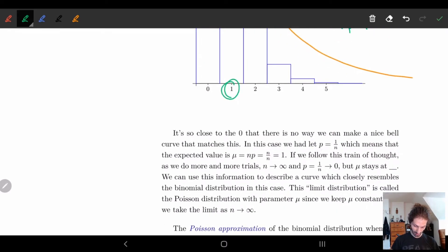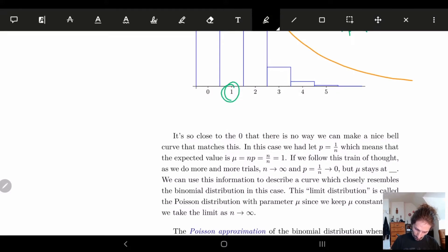So if we let p equal one over n, and in this case we let n be some number, and remember our expected value is μ equals n times p. So p is one over n, n times one over n is n over n so it's equal to one.